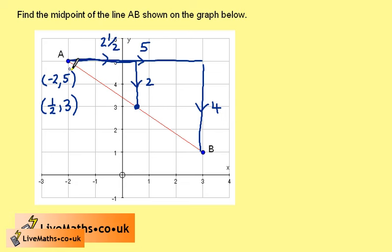As with example 1, we can do this by finding the average of the coordinates. So B is 3, 1.